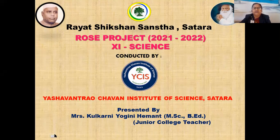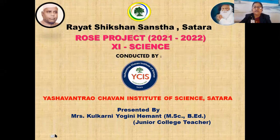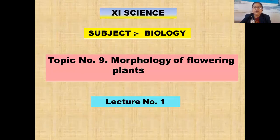Welcome to our students. Raj Sikshan Sarasota Satara, Rose Project 2021-2022. ROSE means Raya Online School Education. Eleventh Science, conducted by Ashwantaraw Zaman Institute of Science, Satara. Myself, Mrs. Kulkarni Yogini Hemant, MSc B.Ed., Junior College Teacher. Today we are going to study Subject Biology from Eleventh Science, Topic No. 9, Morphology of Flowering Plants, Lecture No. 1.